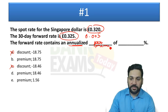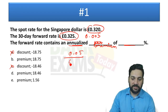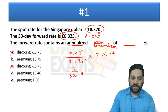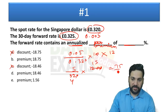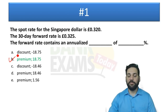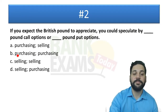The annualized premium in percentage: 0.005 divided by 0.320, multiplied by 100, then multiplied by 12 to annualize. That gives us 5 divided by 320 multiplied by 1200, which equals 18.75%. So the answer is 18.75% — a very simple question but you can see these kinds of questions in the exam.